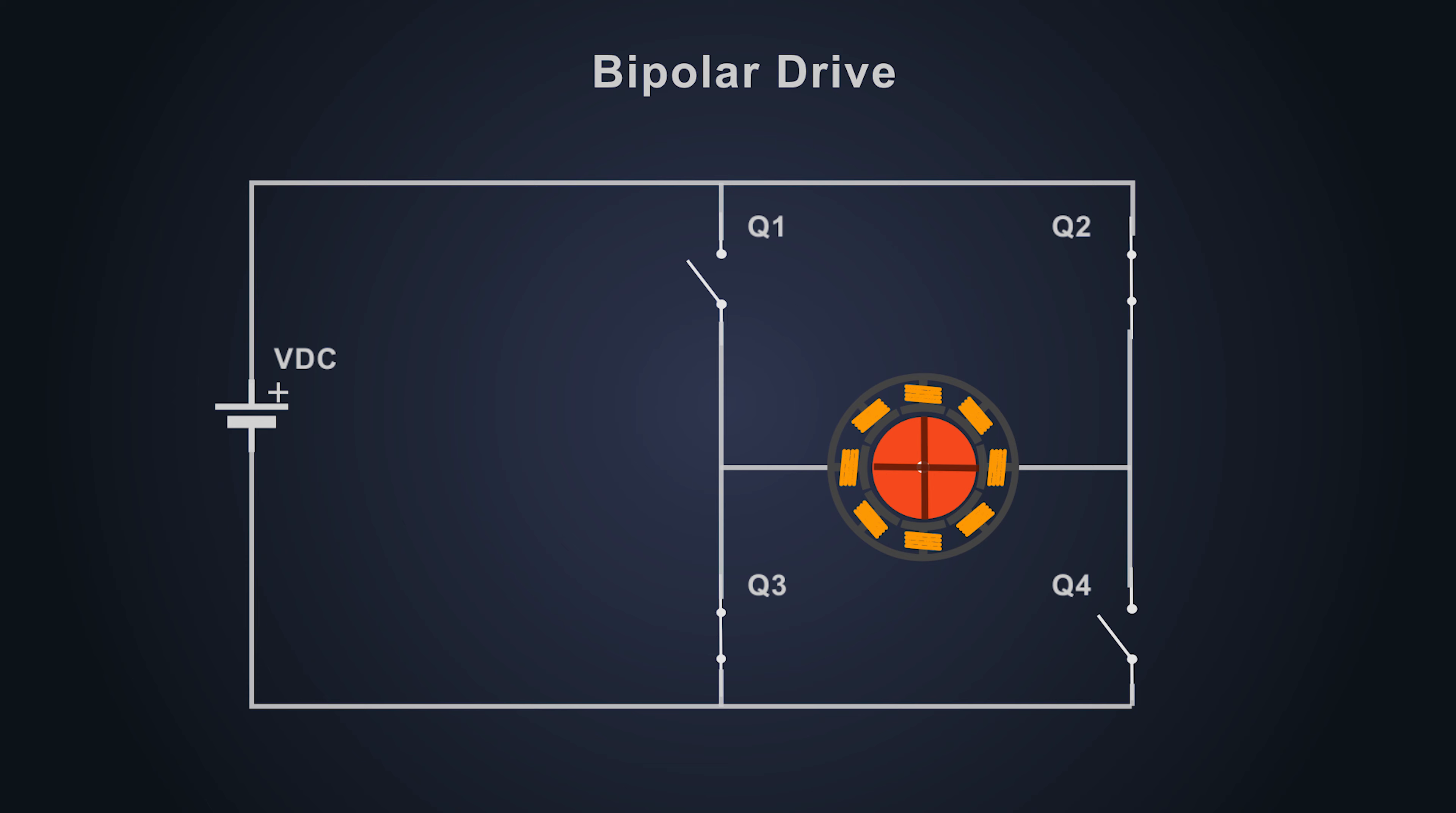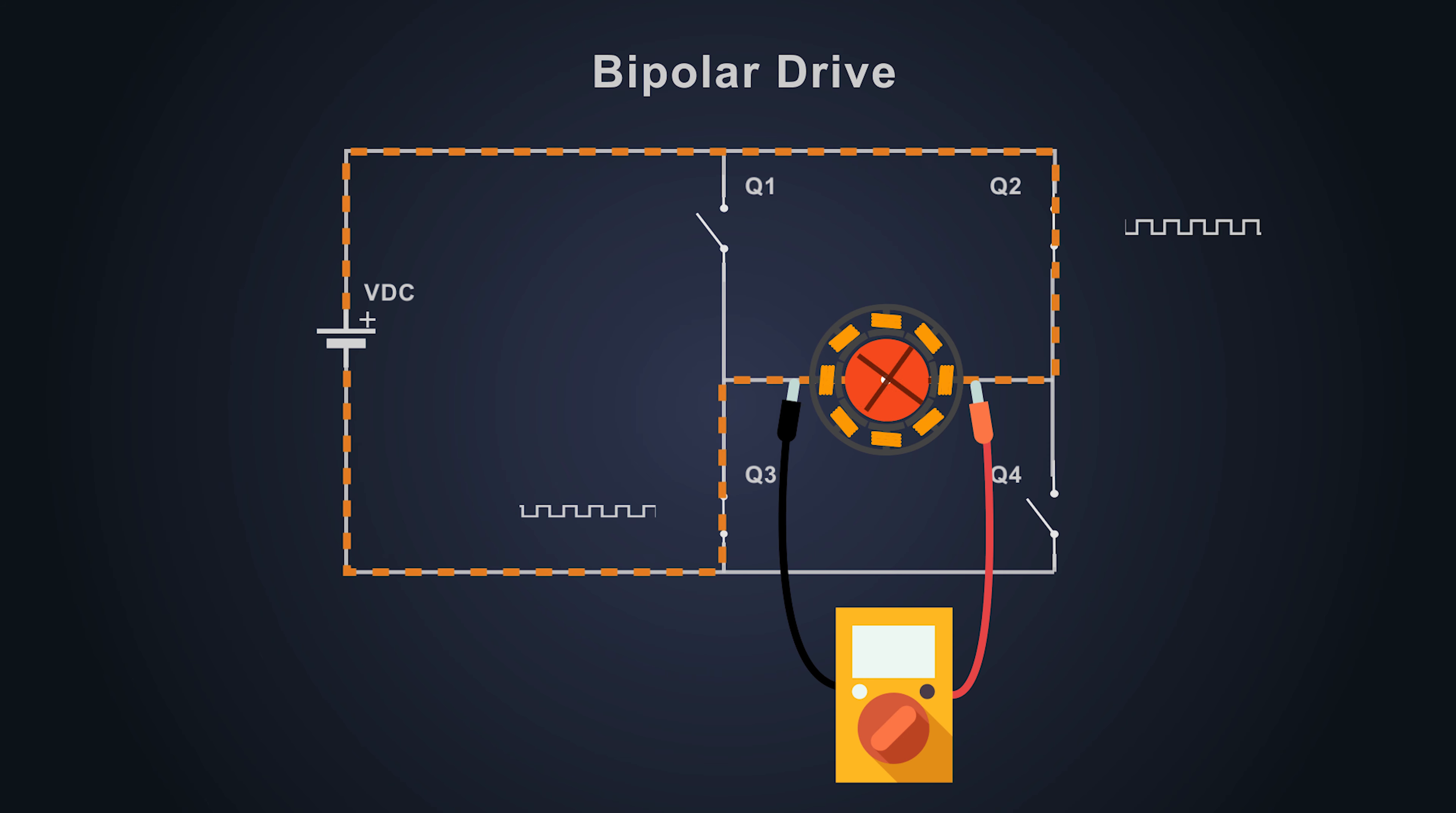When there is forward motoring, Q2 and Q3 are turned on and the voltage across the motor would be plus VDC. After that, during the dead time, the current of the back EMF wants to flow the same path, so it flows to the body diode of the MOSFET Q1 and Q4. But now this time, if you see the polarity across motor, that would be minus VDC. Now when there is reverse motoring, Q1 and Q4 are turned on, the voltage across motor is minus VDC. And during dead time, the current flows to the same direction, but Q1 and Q4 are turned off, so it flows to the body diode of the Q2 and Q3. Hence the motor terminal voltage would be plus VDC.